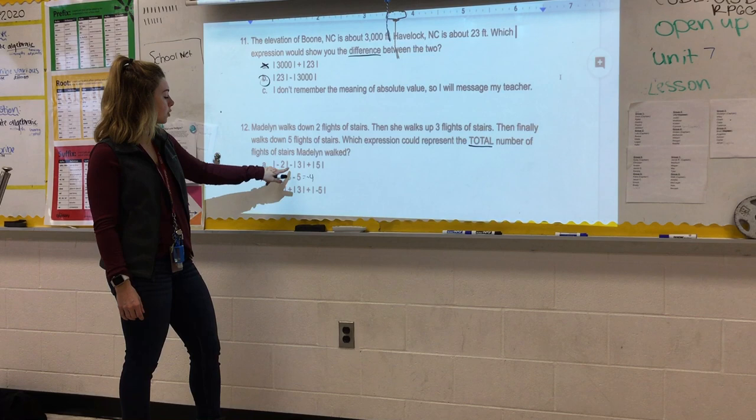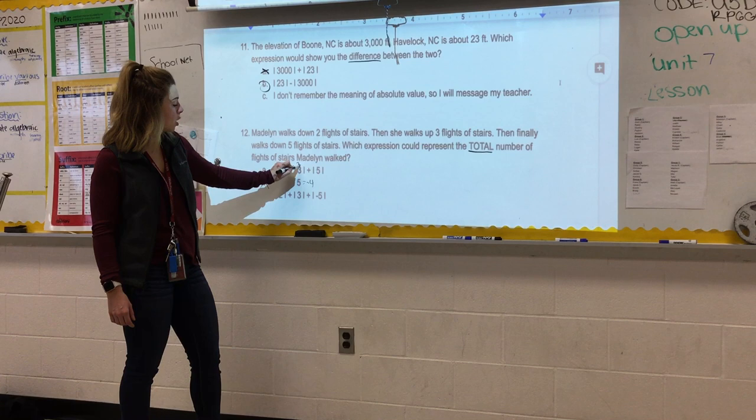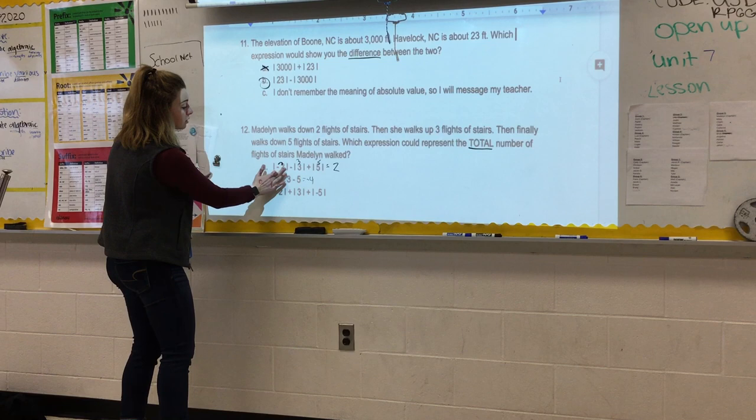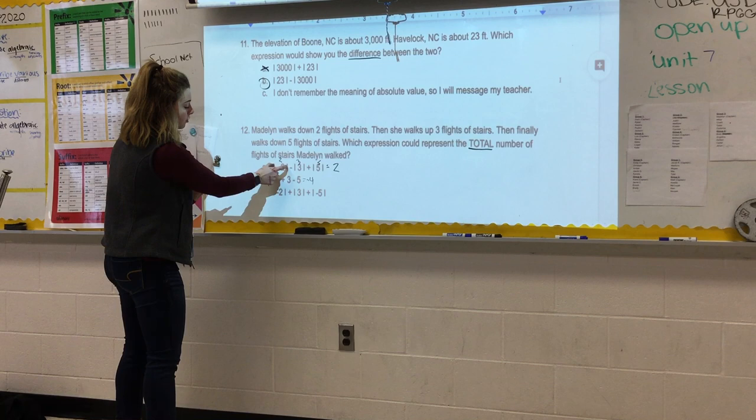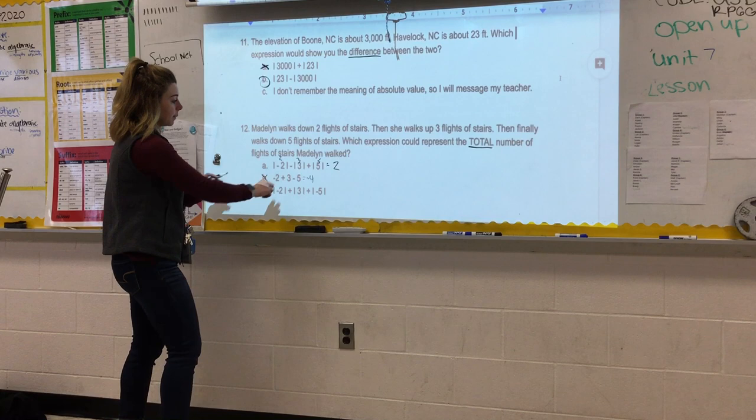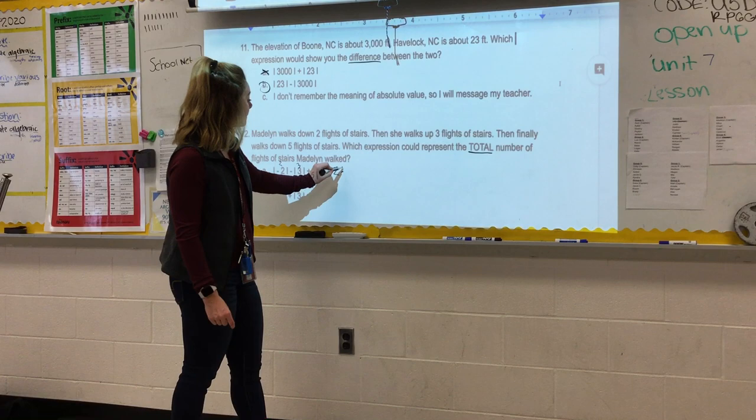So if we look at letter A, we have the absolute value of negative two, which we know is actually just two. And then we have minus the absolute value of three, which we know is just three, and then plus the absolute value of five. So we could rewrite that problem to be two, because pay attention to this, the negative sign is inside the bracket, which means we know that it's asking for the absolute value here. It is not. So this is the absolute value of three. That's what the difference is, the placement of the minus symbol inside or outside of the bracket.